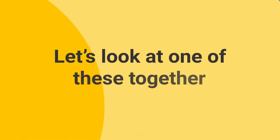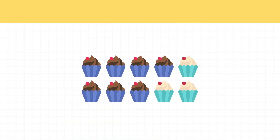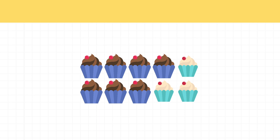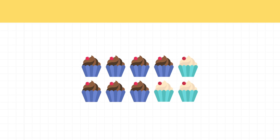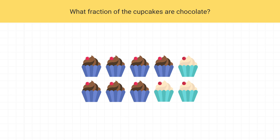Now let's look at one of these together. Here's a pack of cupcakes. Some of the cupcakes are vanilla, and others are chocolate. We want to know what fraction of the cupcakes are chocolate. If I'm looking for the fraction of cupcakes that are chocolate, I can start by counting up the number of chocolate cupcakes.